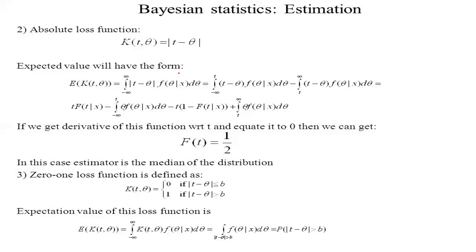It can be shown that MSE(T, θ) = Var(T) + (τ(θ) − E[T])². The term τ(θ) − E[T] is called the bias of the estimator T and can be either positive, negative, or zero. If E[T] = τ(θ), then T is an unbiased estimator and MSE(T, θ) = Var(T). The mean absolute deviation is denoted E[|T − τ(θ)|].